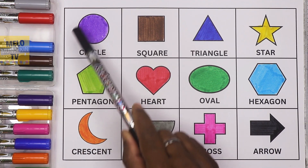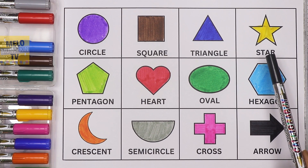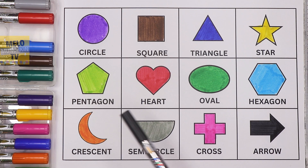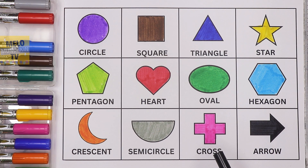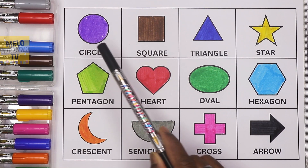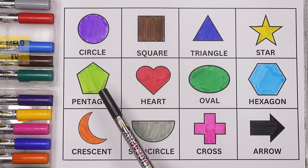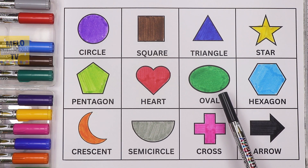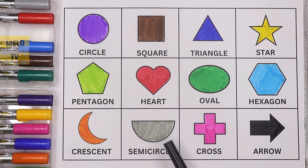The shapes are: circle, square, triangle, star, pentagon, heart, oval, hexagon, crescent, semicircle, cross, arrow. The colors are: purple, brown, dark blue, yellow, light green, red, dark green, light blue, orange, gray, pink, and black.